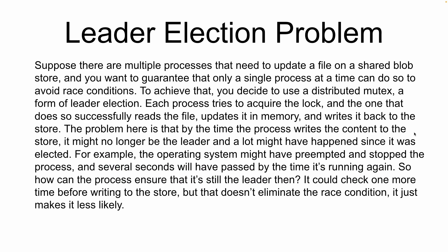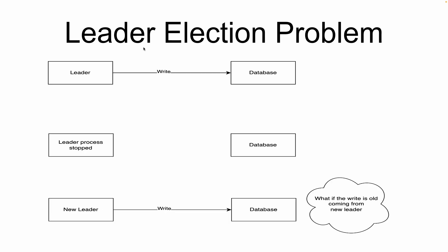There is a problem with leader election. Suppose multiple processes need to update a shared blob store, and you want to guarantee that only a single process can do that at a time to avoid race conditions — so you decide to use a distributed mutex. A mutex is a locking mechanism where the database is locked until the process has finished. The problem is that by the time the process writes content to the store, it might no longer be the leader — for example, the operating system might have preemptively stopped the process and restarted it several seconds later. Checking one more time whether it is still the leader would not eliminate the race condition, only make it less likely.